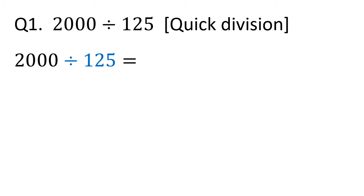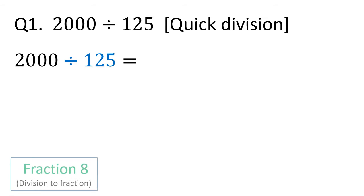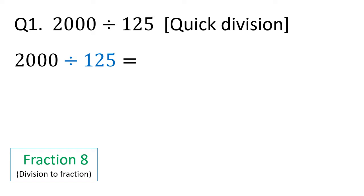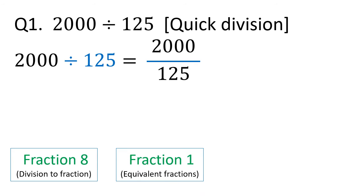Let's see the first question: 2000 divided by 125. Do you recall that a division can be changed to a fraction? If not, please refer to the video Fraction 8. So 2000 divided by 125 can be changed to 2000 over 125. Now do you remember how to find equivalent fractions? If not, please refer to the video Fraction 1.